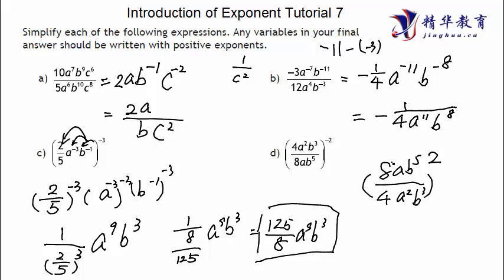And then we simplify inside. 8 and then 4 is just 2. a^8 over a^2, a squared. So it will be 1 minus 2 is a^(-1). And then b^5 divided by b^3 is b^2 to the power of 2.